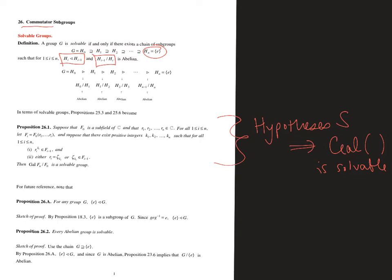We're going to investigate these things called commutators as a way of looking at whether or not subgroups are normal. Before we do that, there are a few useful facts. First of all, the identity subgroup is always a normal subgroup — you can see the proof right there. And every abelian group is solvable, because in an abelian group, every subgroup is normal. So we can just take the chain G and then the identity subgroup, and that's our finite chain for solvability.